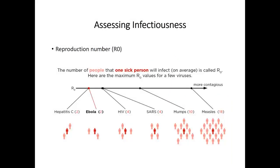This slide introduces the concept of R0 — reproduction number — for those without an epidemiological background. For every one person infected with the virus, how many people will they transmit to? This compares several viruses: hepatitis C, Ebola, HIV, SARS coronavirus, and measles. Measles is our most communicable virus — it's aerosol transmissible, and a person could get on a train, exit, and 30 minutes later 8–15 of the 30 people who board could become infected.